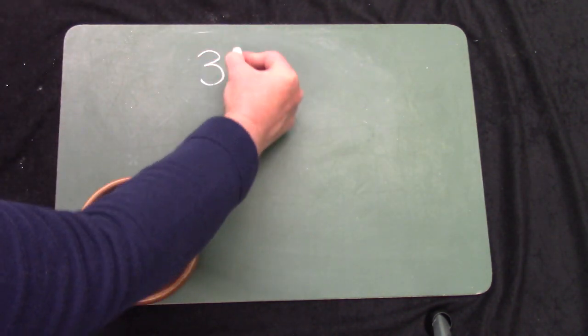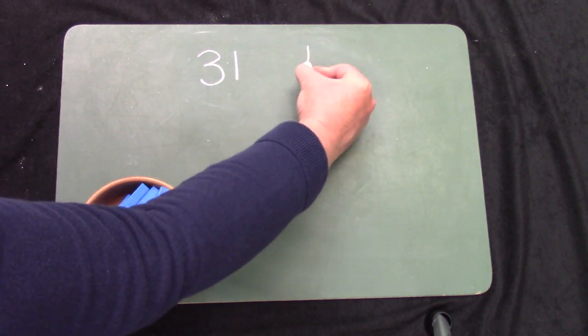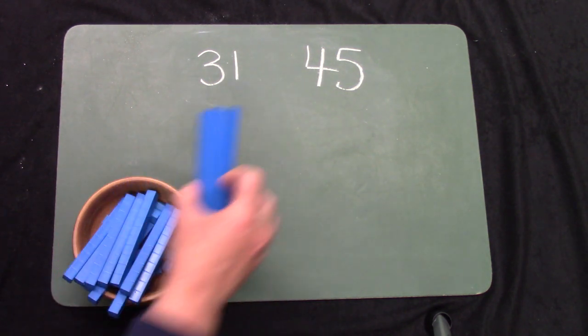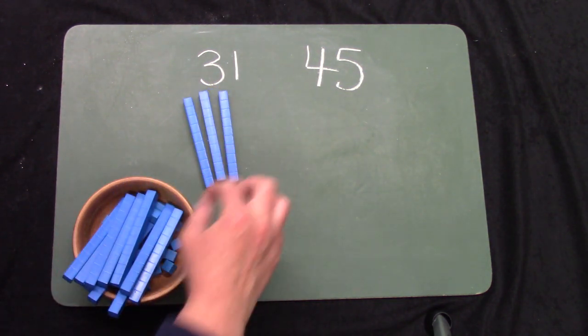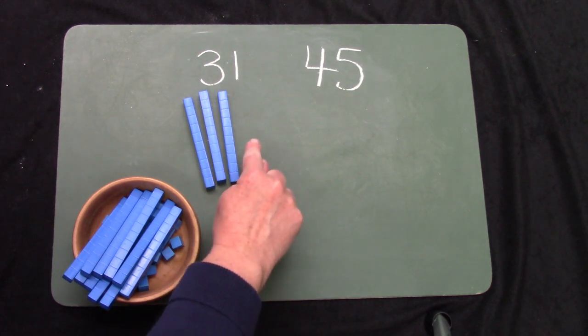What about the numbers 31 and 45? For the number 31, we would need 3 groups of 10 and 1. 10, 20, 30, 1.